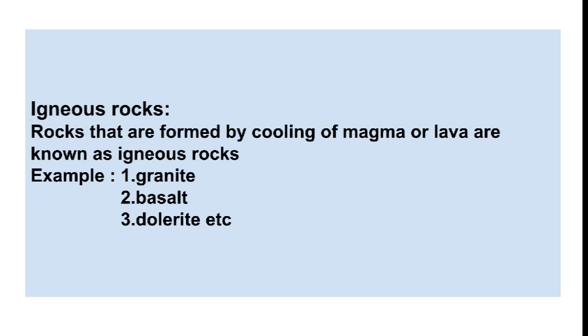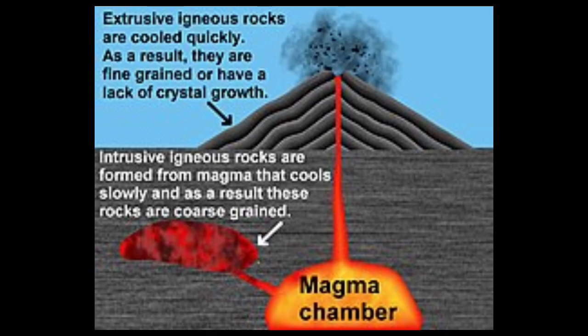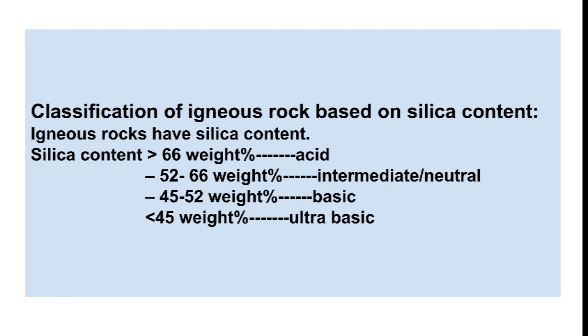Examples of igneous rocks include granite, basalt, and trachyte. Generally, igneous rocks are of two types: intrusive igneous rocks and extrusive igneous rocks. Rocks formed inside the earth after cooling are known as intrusive igneous rocks, and rocks formed by cooling outside the earth are known as extrusive igneous rocks.